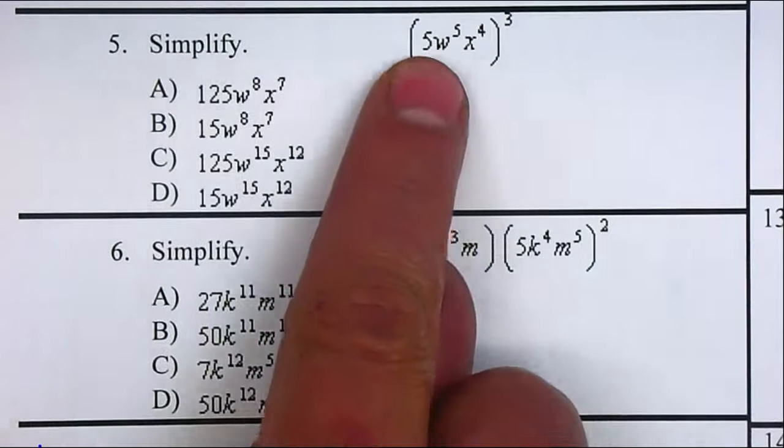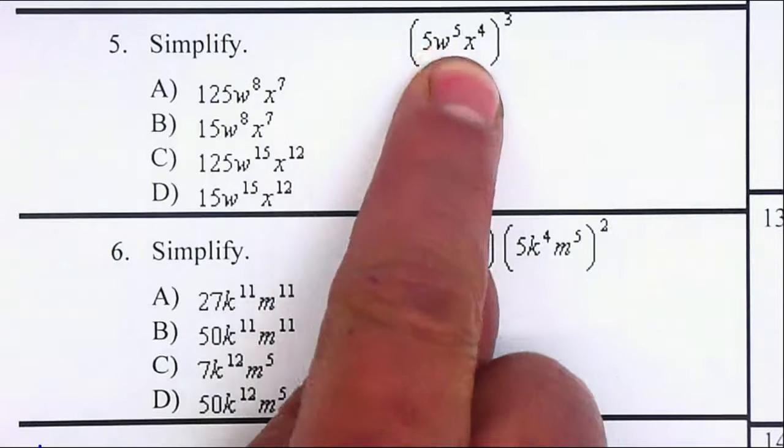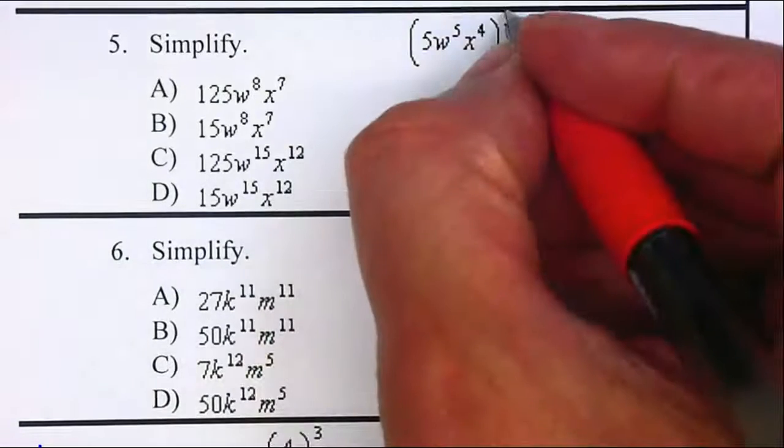On problem number 5, we have 5w to the 5th power and x to the 4th, and we have an exponent outside the parenthesis.